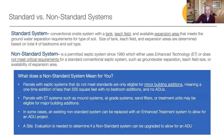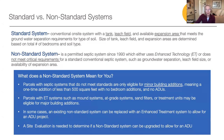Non-standard systems either use enhanced technology or do not meet the requirements of a standard conventional system, but function adequately for the existing usage. So what does it mean if you have a non-standard system? Parcels with systems that do not meet current code, whether standard or non-standard, are not eligible to build an ADU, but may do a one-time addition of up to 500 square feet with no additional bedrooms. Parcels with enhanced technology systems may be eligible to build an ADU with an upgrade to account for the additional waste, and properties with non-standard systems may be able to upgrade to include an enhanced technology system to allow for an ADU.